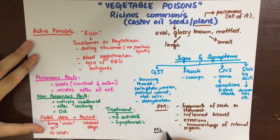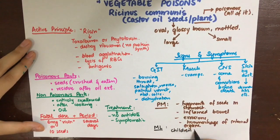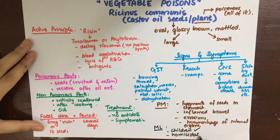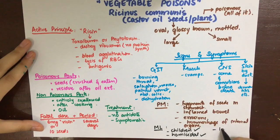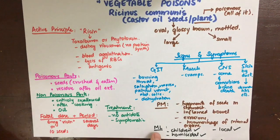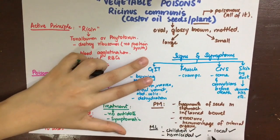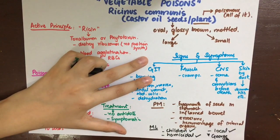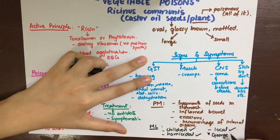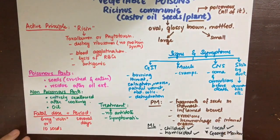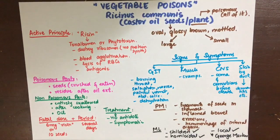Children can be accidentally exposed to the seeds. It is used in homicides, mixed in food. There is local irritation of the skin, nose, and eyes from the powder. Historically, George Markov was assassinated by a tiny sphere containing ricin concealed in an umbrella and then injected into him.